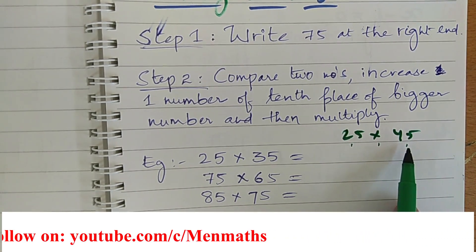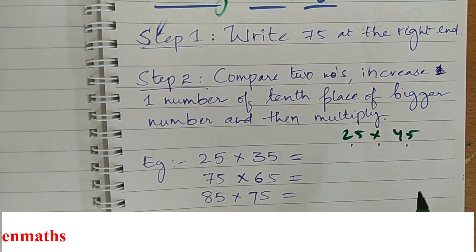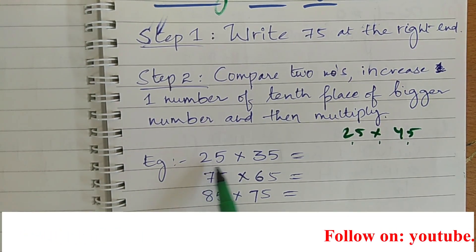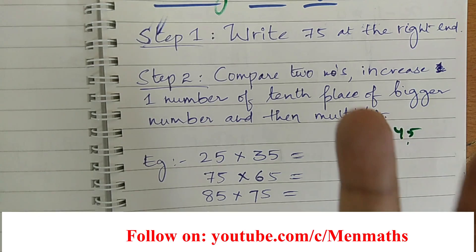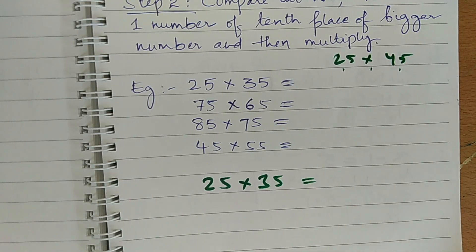So, for this type of multiplying the numbers, we cannot use this trick. Now, let us multiply this 25 into 35 only in two steps. 25 into 35.